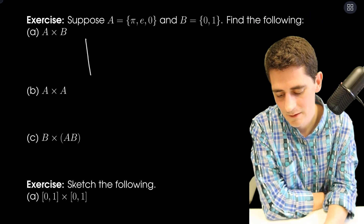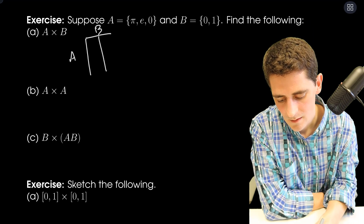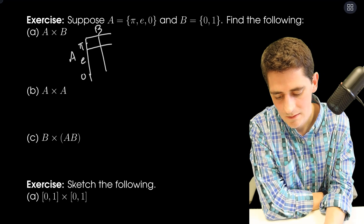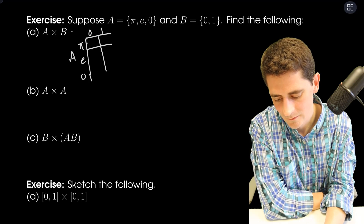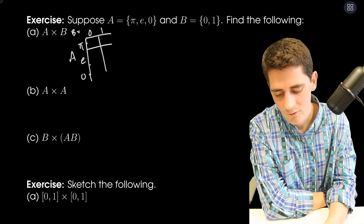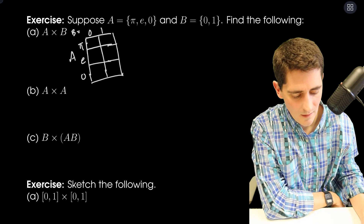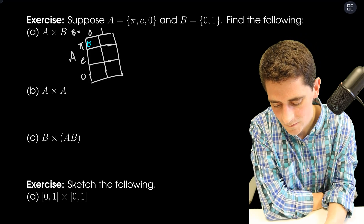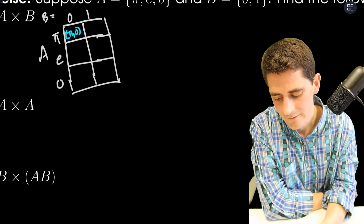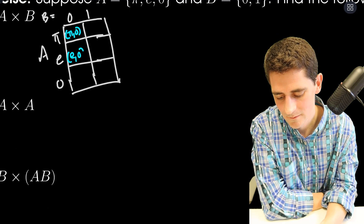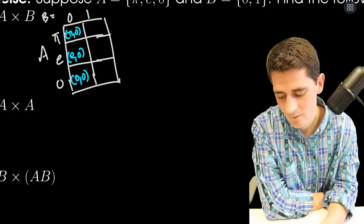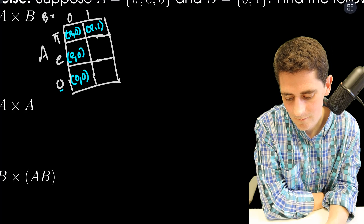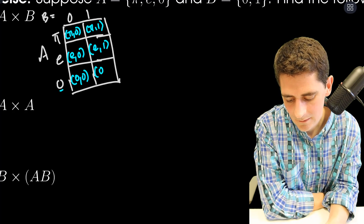The best way to think about this is more like a grid. I have A along one axis with π, E, and 0, and B along the other with 0 and 1. In the cells of this table is an ordered pair where the first thing comes from A and the second thing comes from B. So the first row gives (π,0), (E,0), (0,0), and the second row gives (π,1), (E,1), (0,1).